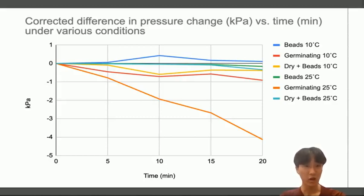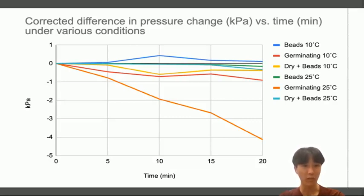Finally, the non-germinating seeds decrease very slightly in pressure compared to the germinating seeds, whose pressure decreased substantially. This means that germinating seeds respire a lot more than non-germinating seeds. This can be attributed to the fact that germinating seeds need a lot more energy, as they have to fulfill the steep energy demands brought upon by mitosis. On the other hand, non-germinating seeds have evolved to be dormant, using minimal energy during this period.